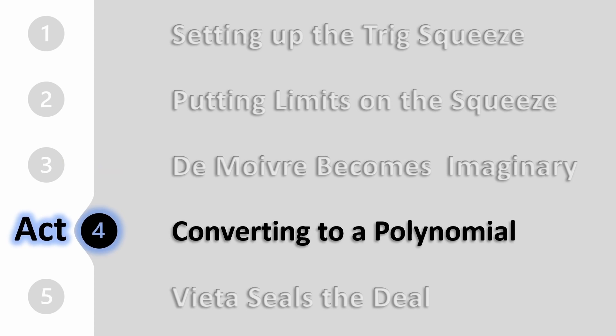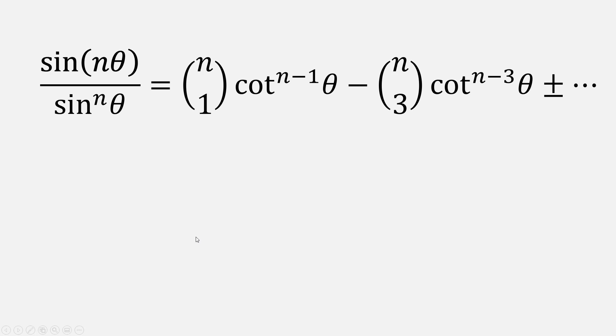The final result is this rather unusual identity, which will serve as the linchpin to our solution. Let's convert that identity into a polynomial. If we can get the left-hand side equal to 0, then we'll have an expression strictly in terms of cotangent. With a clever substitution, it actually does equal 0.